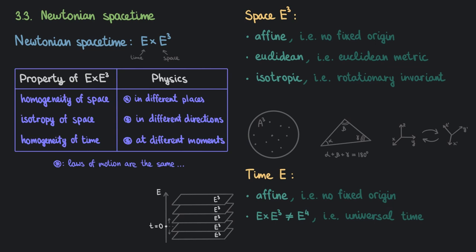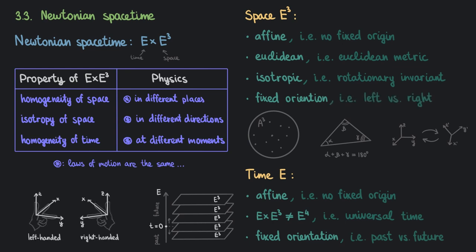Let's also talk about the timeline. Just like E³, it's also affine, so it has no fixed origin too. This corresponds to the fact that it doesn't matter which moment of time you choose as your t equals zero, or that the laws of mechanics should have the same form at different moments in time. The fact that Newtonian spacetime is not just E⁴, and we are considering the pair E and E³ instead, corresponds to the notion of universal time we've talked about. So we should think of Newtonian spacetime as a sequence of spatial slices along the universal timeline, where each particular slice is a Euclidean space E³ and every observer in it shares the same notion of time. Both E and E³ have fixed orientations: in the case of time, this specifies the difference between the past and the future, and in the case of space, the difference between left-handed and right-handed frames.